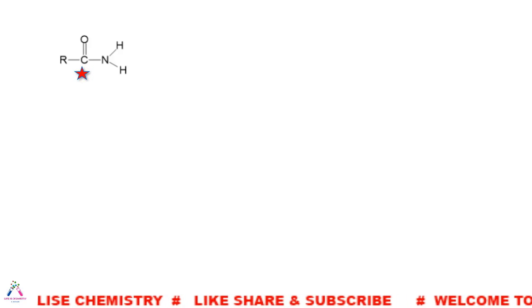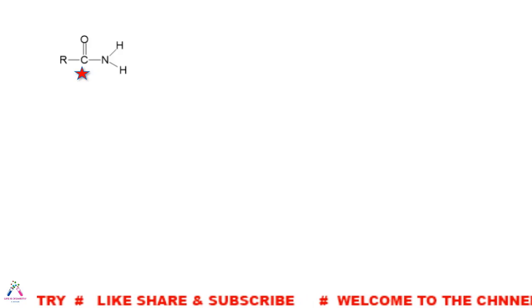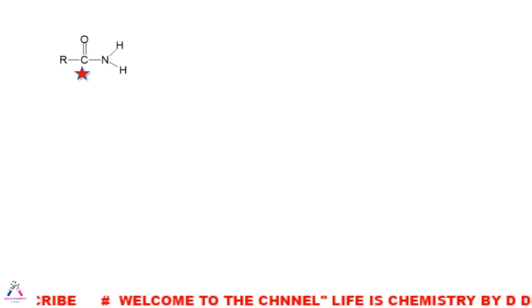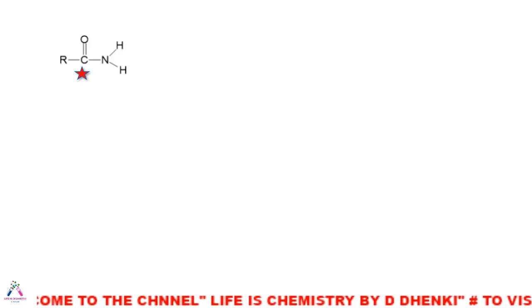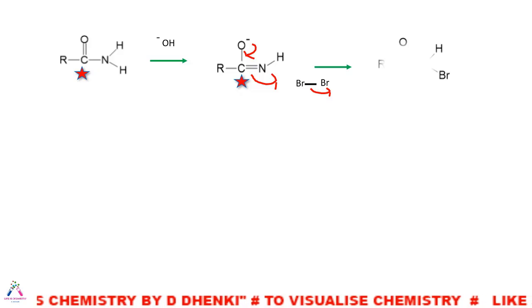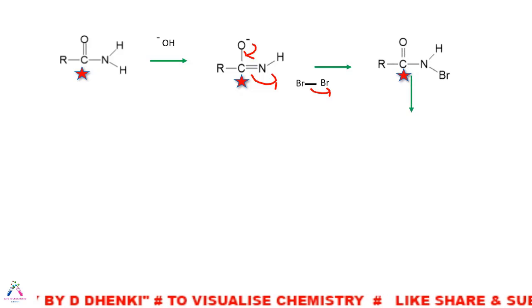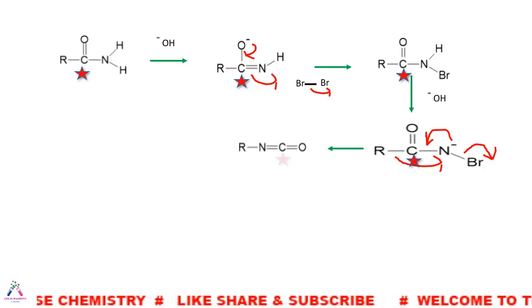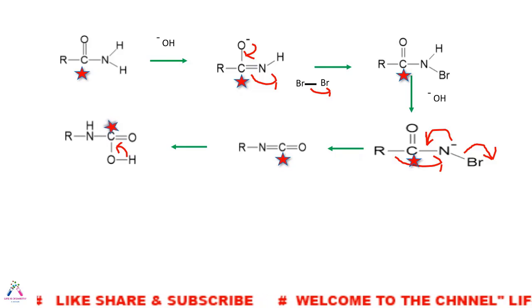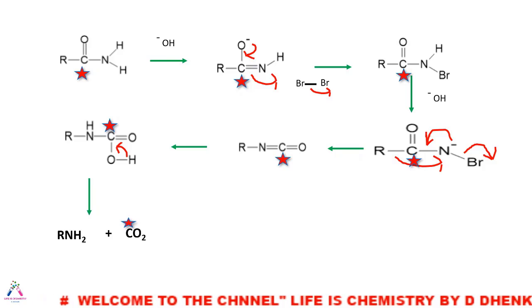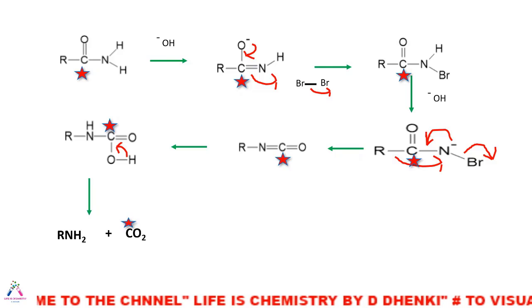The R group may be alkyl or aryl. If the carbonyl carbon of the amide is labeled with an isotope, where will it be found in the ultimate product? Returning to the mechanism, the isotope-labeled carbon will be found in the carbon dioxide. This is because the R group migrates intramolecularly to form the isocyanate intermediate; in this intermediate the carbonyl carbon contains the isotope label, and it hydrolyzes to carbon dioxide. So the carbon of CO₂ will carry the isotope label.